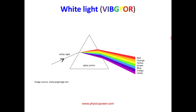Newton was the first person to identify that white light consists of seven colors — VIBGYOR. He passed white light through a prism and obtained seven different colors.